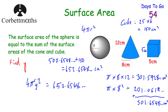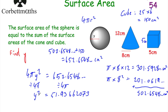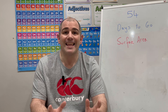To find y, we divide both sides by 4 pi. That leaves y squared on the left, and 51.93662073 on the right. Square-rooting both sides gives y equals the square root of 51.93662073, which equals 7.2067 centimetres. So the radius of the sphere is 7.2067 centimetres.